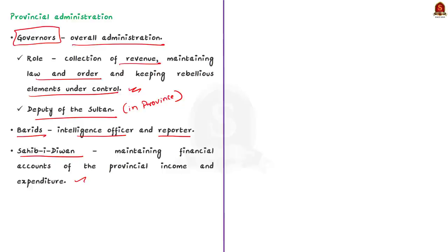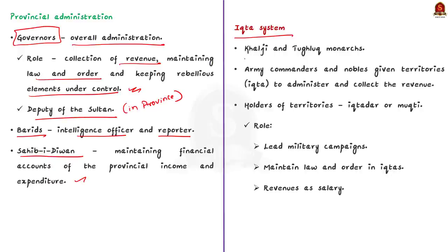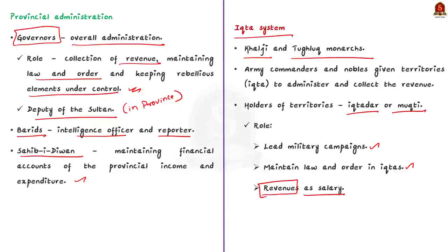Before understanding local administration, you should know that the Sultanate followed a system called the Iqta system, mainly under Khalji and Tuklag monarchs. Under this system, army commanders and nobles were given territories to administer and to collect revenue from. These territories were called Iqta and their holders are called Iqtadas or Mukti. The duties of the Muktis was to lead military campaigns and maintain law and order in their Iqtas. In exchange for military services, the Muktis collected revenues as salary and also paid their soldiers from these revenues. Iqta is essentially a system of payment to officers and maintenance of army.